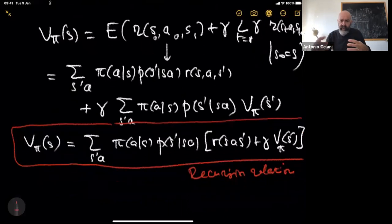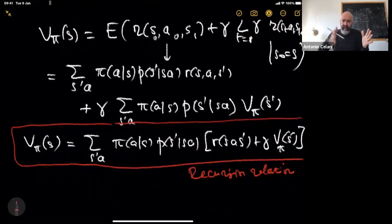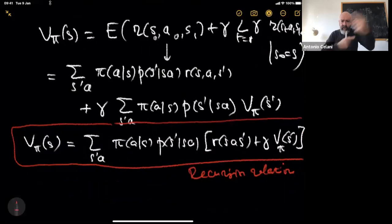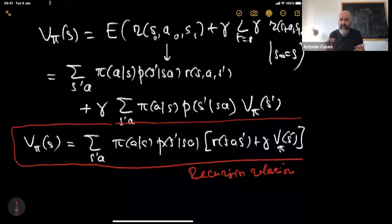This is a recursion relation that is strongly recurrent — there's no longer the feedforward structure that existed before, where you had a vector at a certain time and could derive the vector at the previous time. Now every state talks to every other state with the same object. Nevertheless, you can solve this equation. It's a linear equation, so you can solve it very simply — it requires just one sweep to be solved explicitly. This is our starting point.